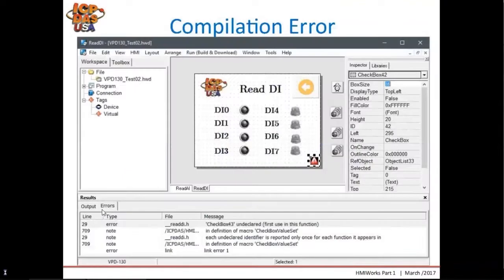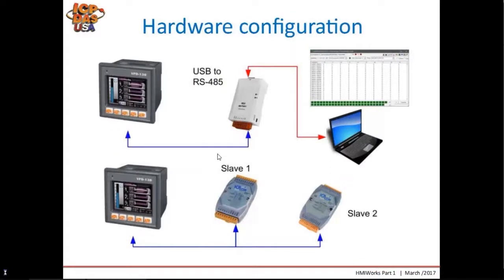We can see that the first line in the editor using the wrong name is line 29. We select Build and Render, and it gives us an error message at the bottom saying checkbox43 is undefined, at line 29. Clicking on the error checkbox in the inspector confirms the correct name is checkbox42. So we go back to the code editor, fix the error, compile again, and then download our program to the touchpad.